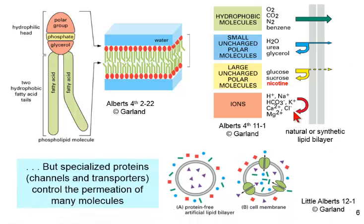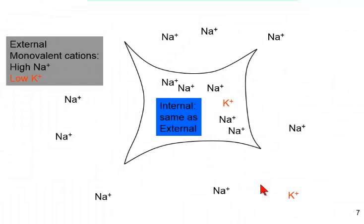The moral of today's lecture, the overwhelming result, is that specialized proteins, channels and transporters, do control the permeation of many ions. We go from a completely separate compartment to communicating compartments. Let's talk about a cell that has evolved in seawater and has no concentration gradients of ions between the outside and the inside. The external monovalent cations, or in blood, have high sodium, low potassium, mostly sodium on the outside, a little bit of potassium, and on the inside mostly sodium and a little bit of potassium. This cell cannot do much of interest.